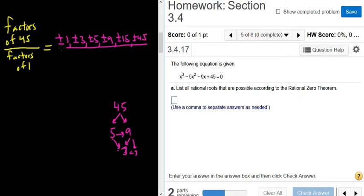So those should be all the factors of 45 over the factors of 1, which is just 1, which is just plus or minus 1. And then you just do 1 over 1, 3 over 1, 5 over 1, etc. So you just get the top piece. So this would be plus or minus 1, plus or minus 3, plus or minus 5, plus or minus 9, plus or minus 15, plus or minus 45.